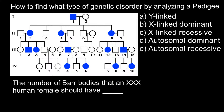Let's start by looking at this pedigree. You'll notice that in each generation there are people who are affected — we don't see any skipping of generations where a generation may not have the disorder and then it reappears. That gives us a clue that this is a dominant genetic disorder, so we can cross out all the recessive genetic disorder answers.